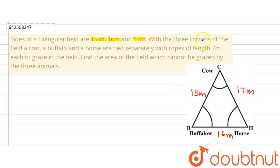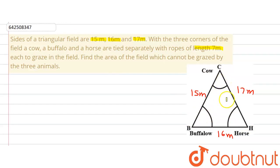With the three corners of the field, a cow, a buffalo and a horse are tied separately with ropes of length 7 meter each to graze in the field. So there is a cow, a buffalo and a horse at all three corners of the triangular field, and the length of the rope is 7 meter.